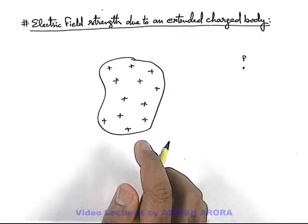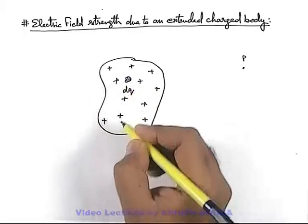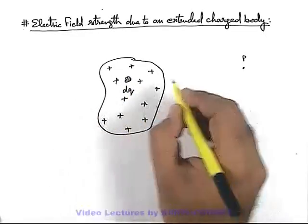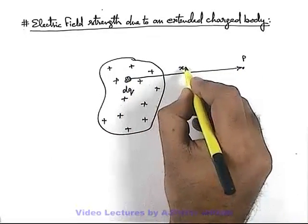Then in this situation, we consider a small elemental charge dq in the volume of body. And say from this dq at point P, the position vector is x vector.